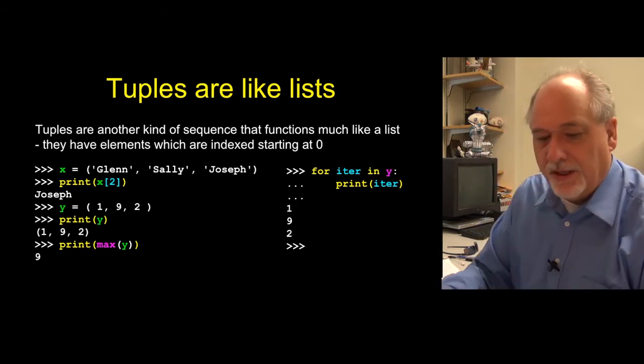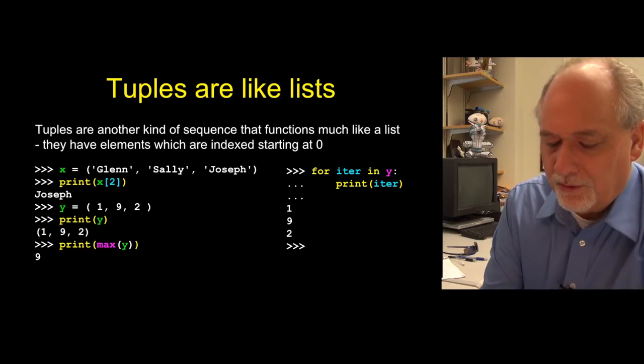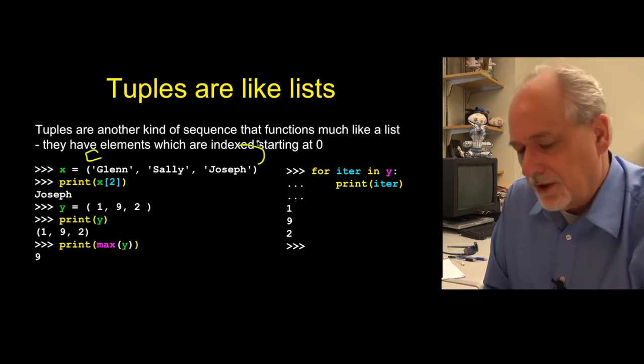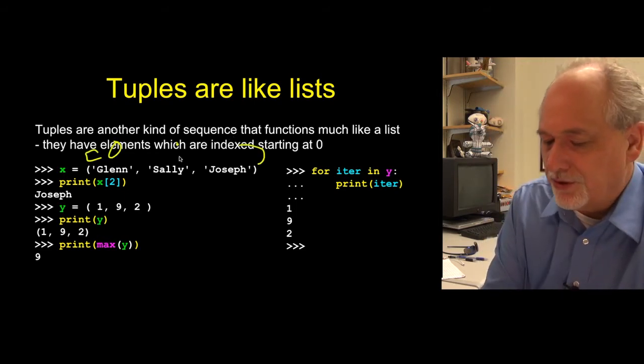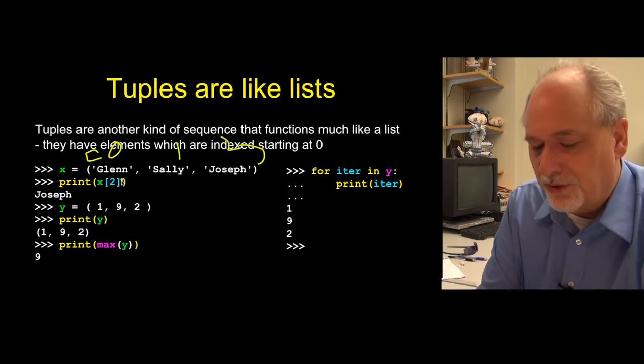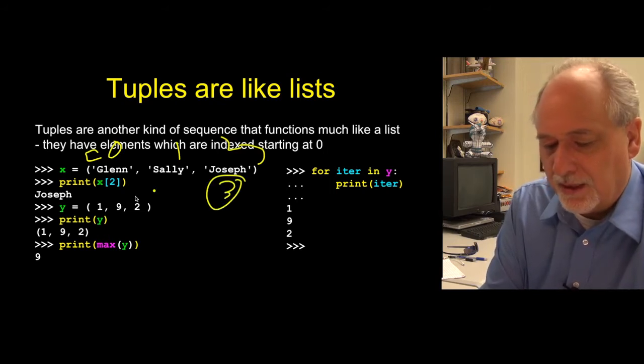So they function very much like lists, in that they have things, and the difference is there are no square braces. There is a parenthesis, round brace, and they have positions zero, one, and two, just like a list, and you can look things up, x sub two. So x sub two is actually the third element here, and so that prints out Joseph.